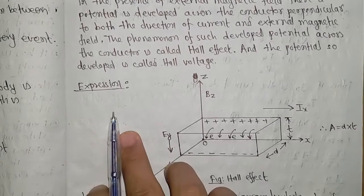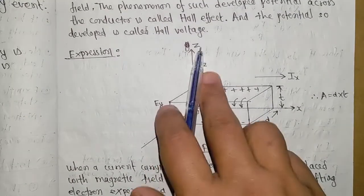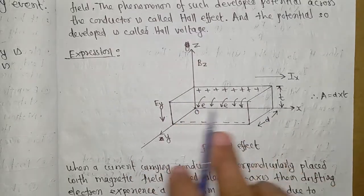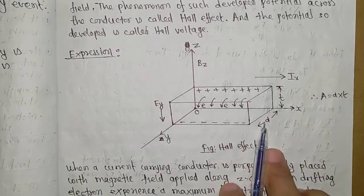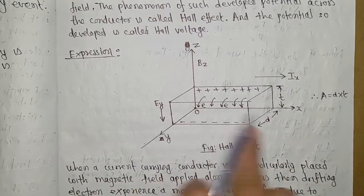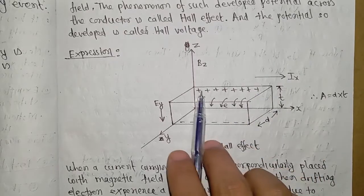Now for the expression, let's draw a figure. We have x-axis, y-axis, and z-axis. I'm assuming a conductor with thickness t, width d, and certain length l.